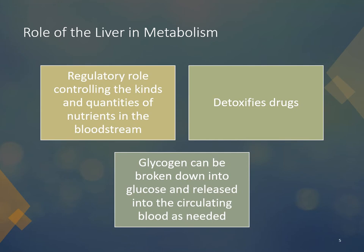The liver plays a huge role in regulating how everything gets broken down. It controls the kinds and quantities of nutrients going into the bloodstream. As we saw in chapter three on digestion, everything goes into the liver from the small intestine via the portal vein. The liver determines what stays and what doesn't, detoxifies things like medications and alcohol, and breaks down glycogen into glucose for release into the circulating blood as needed.